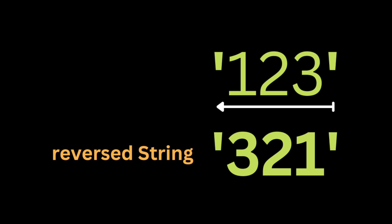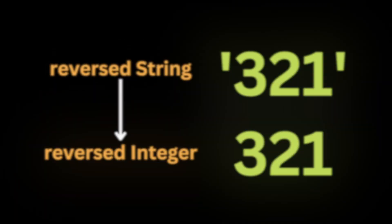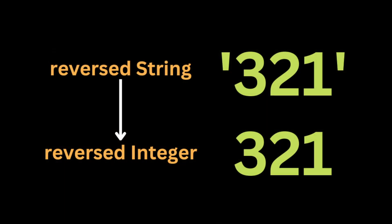Then we're going to start iterating through the string in reverse order, meaning we start from the last character and add each character to the beginning of the new string. After we add all the characters to the string, we convert the reversed string back to an integer and return the reversed integer.